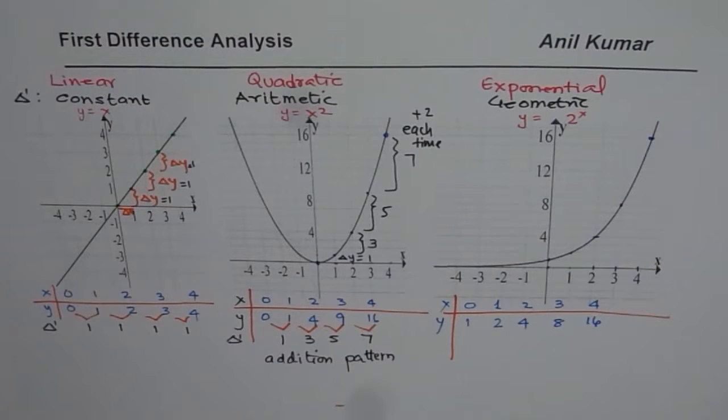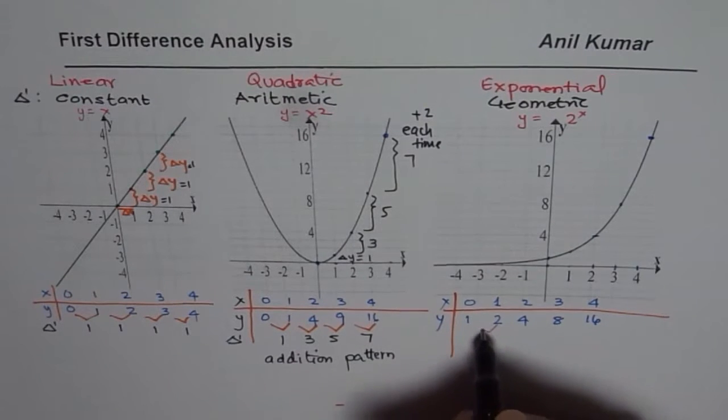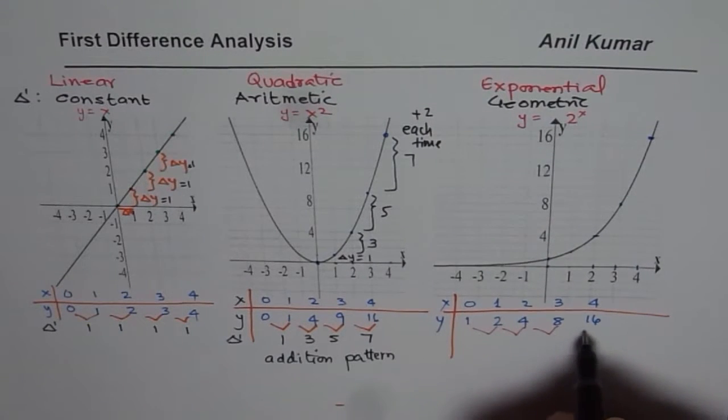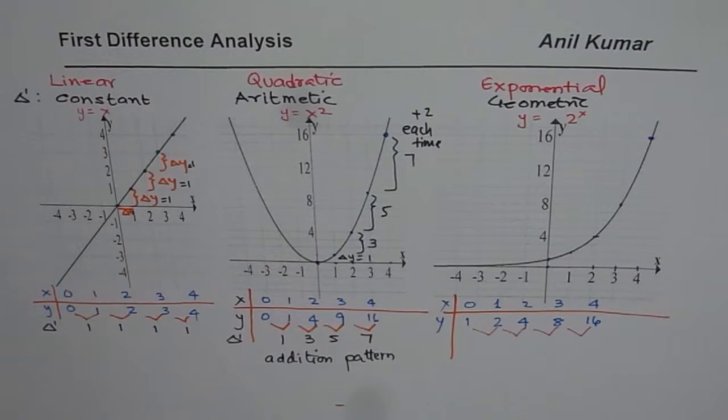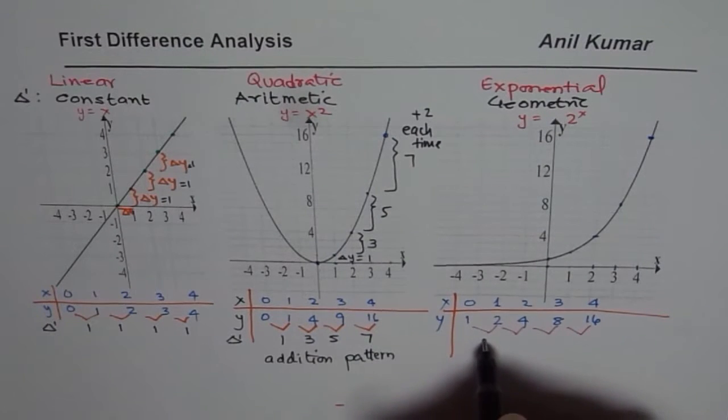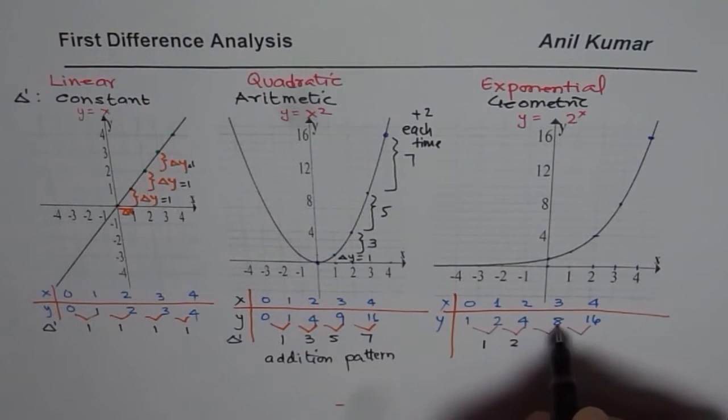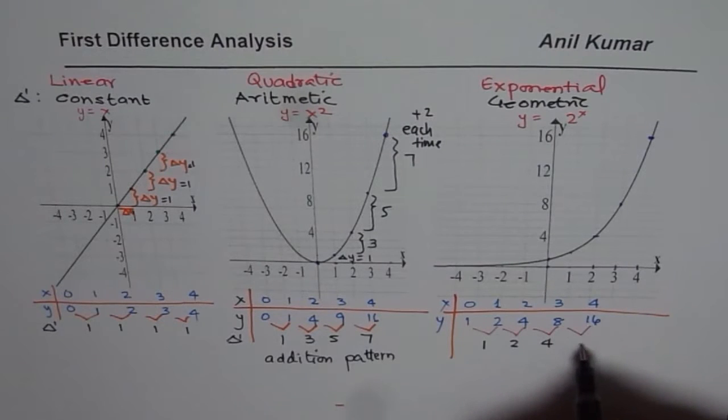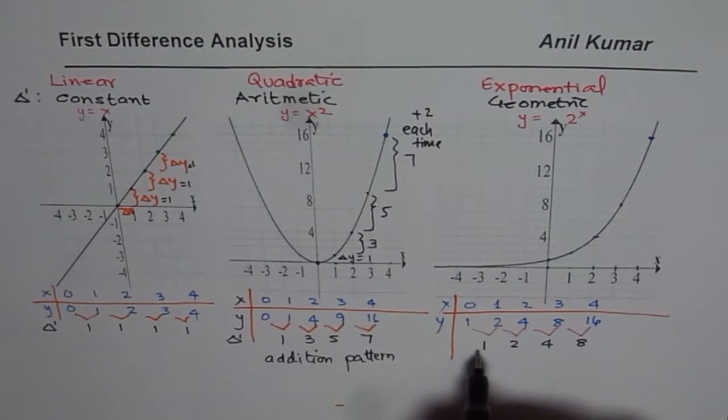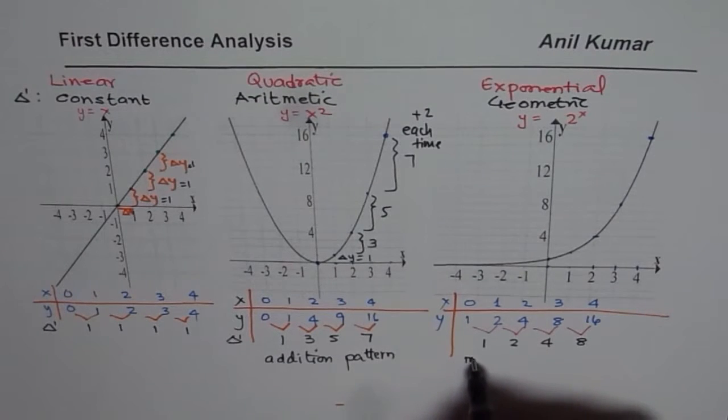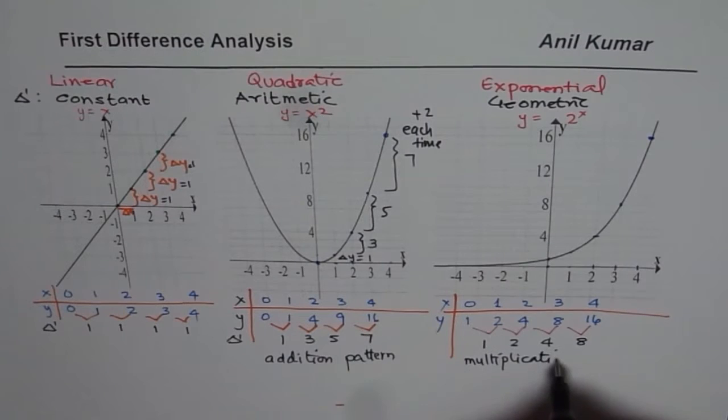That is, again, we will do 2 minus 1, 4 minus 2, 8 minus 4, and 16 minus 8. 2 minus 1 is 1, then 4 minus 2 is 2, 8 minus 4 is 4, 16 minus 8 is 8. So that pattern which you see is kind of a multiplication pattern. Multiplication pattern.